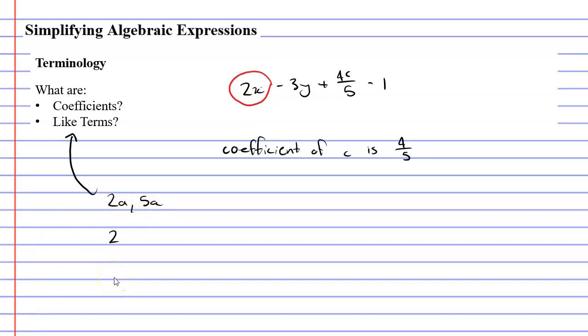If I had 2a and 5b, these would not be like terms because the pronumerals are different. We have a and b here. So we'll tick this for like terms and cross that for not like terms.